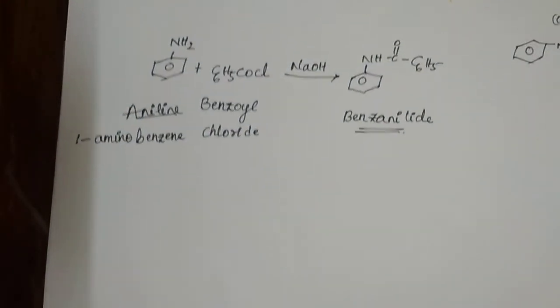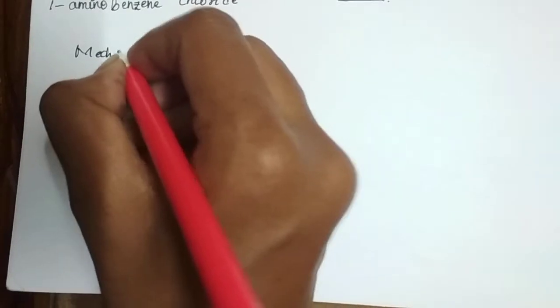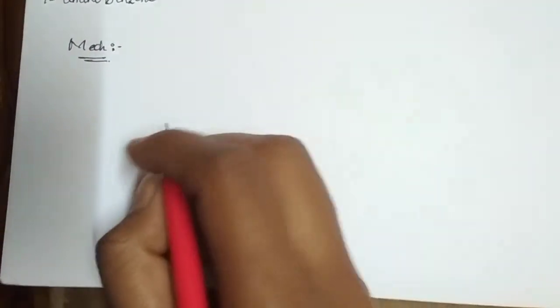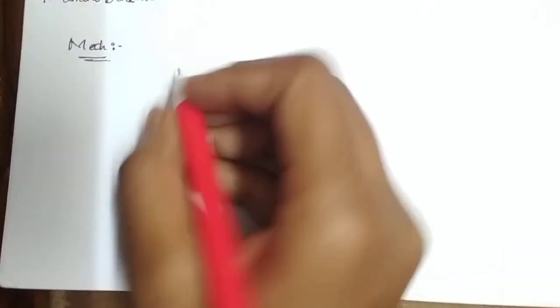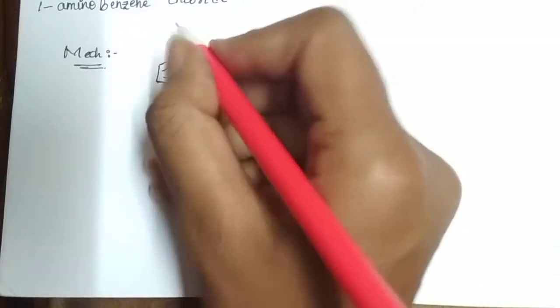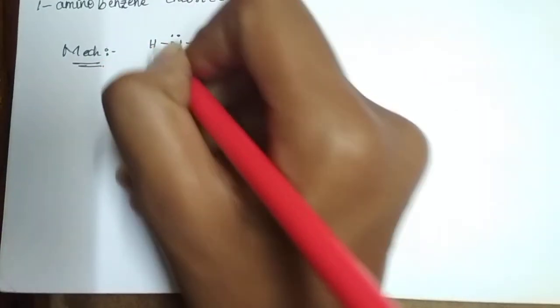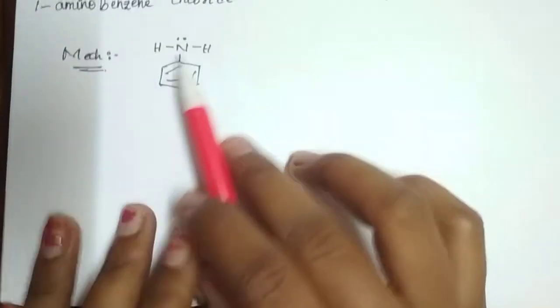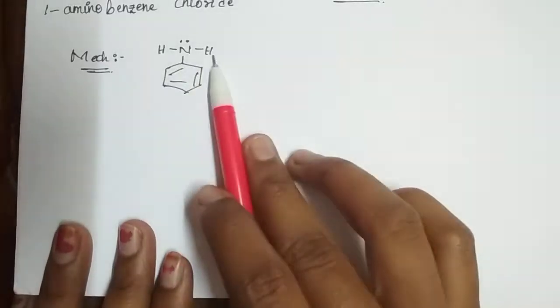Now let us go into the mechanism of this reaction. First of all, mechanism: we have to react with the aniline and benzoyl chloride. We get aniline where the nitrogen has one lone pair of electrons. Here we have to write the two hydrogens like this to represent the mechanism.